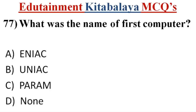Question number 77. What was the name of first computer? A. ENIAC. B. UNIAC. C. PARAM. D. None. Correct answer is A. ENIAC.